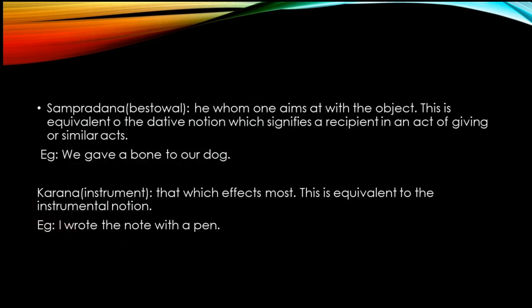The next one is Sampradhana. Sampradhana — to whom the gold is given. Raja gave gold to the Brahmin. It means he whom one aims at with the object. In English, it is equivalent to the dative notion. For example: 'We gave a bone to our dog.' In Malayalam: 'Yangal pattikya elu kuduttu,' where 'pattikya k' is the vibakti there to show Sampradhana.